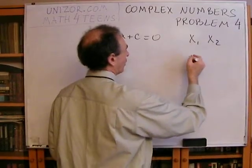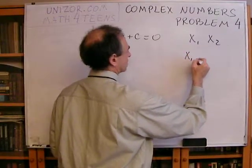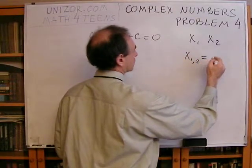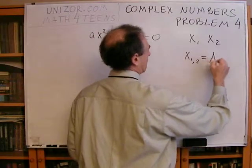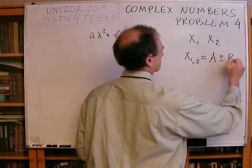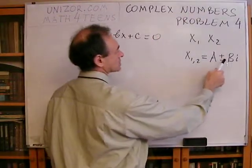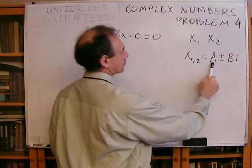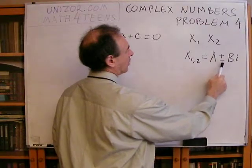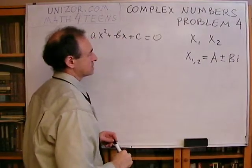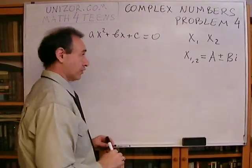then either both real or X1 and X2 is equal to something like A plus minus Bi, where A and B are real numbers. So both roots have the same real part, and the imaginary part is of opposite sign. So that's what we have to prove here.